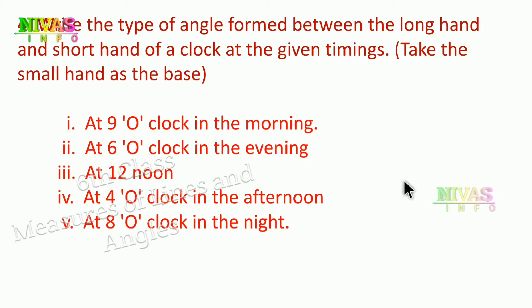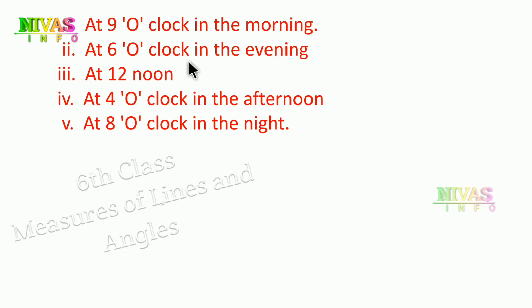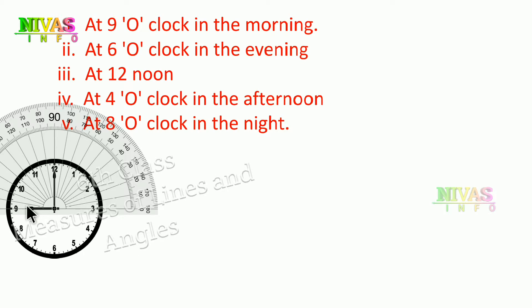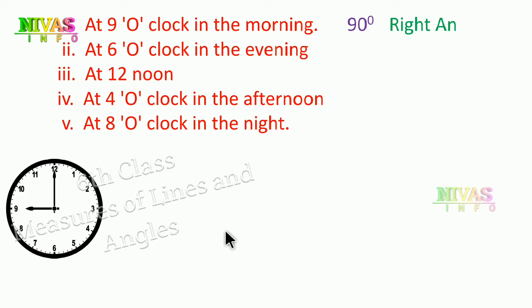Next problem: first at 9 o'clock. We have a clock picture and a protractor as a measure. It shows 90 degrees, so this is a right angle.